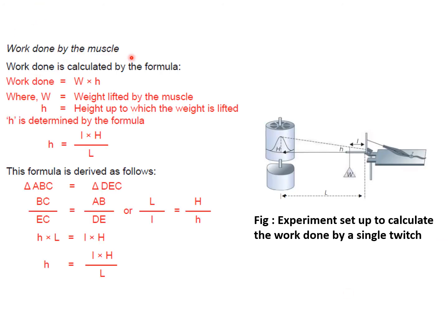Work done by the muscle is calculated by the formula: work done = W × h, where W is the weight lifted by the muscle and h is the height up to which the weight is lifted.